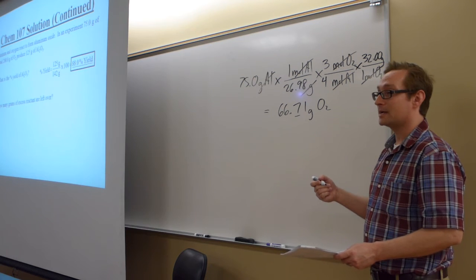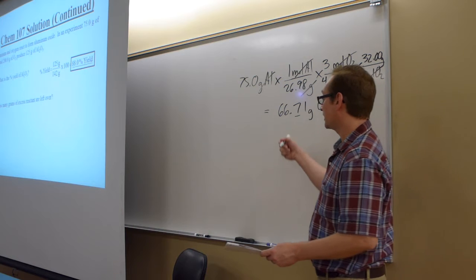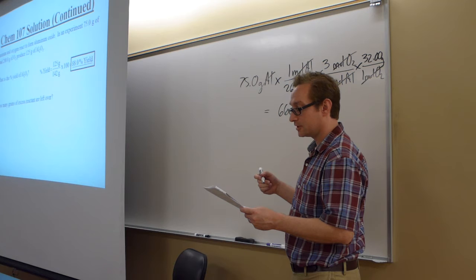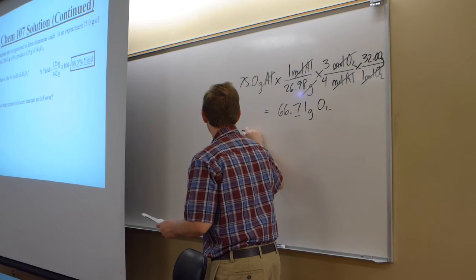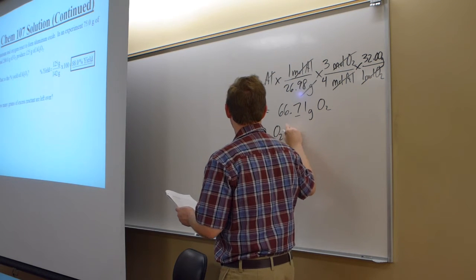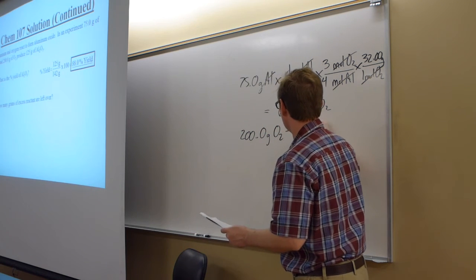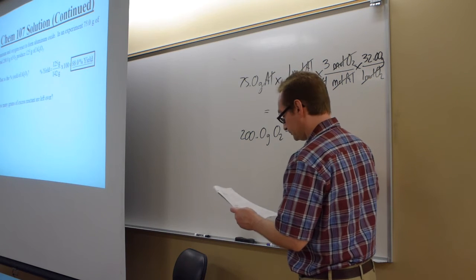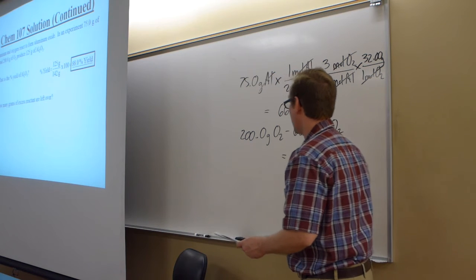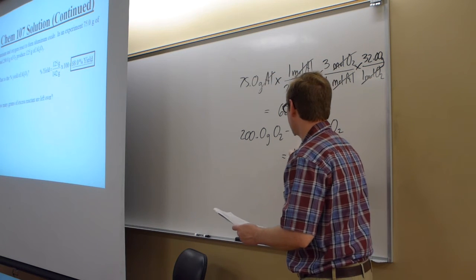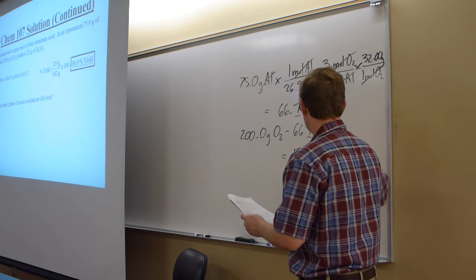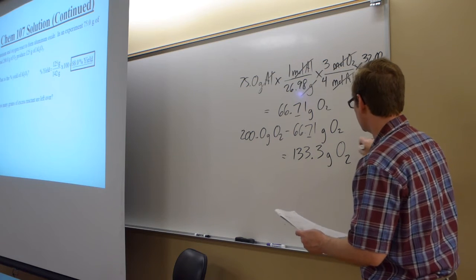How do we figure out how much mass of oxygen is left? Subtract this from what? The original mass, which was 200 grams, right? All right, so 200 grams of O2 minus the 66.71 that was used. All right, now it would give us 133.3 grams of O2 that was left.